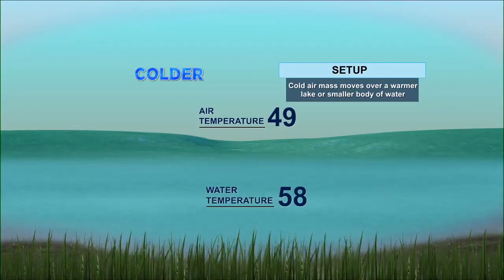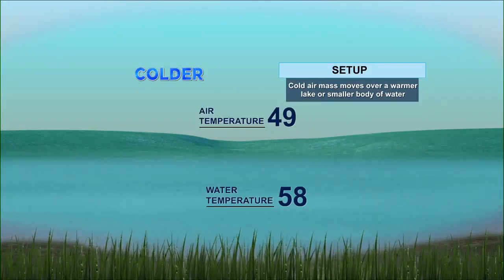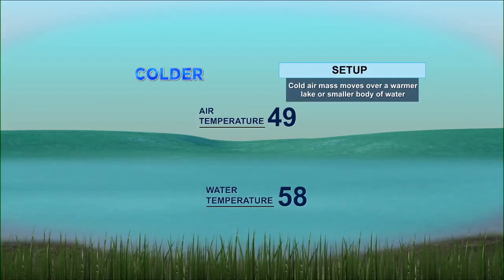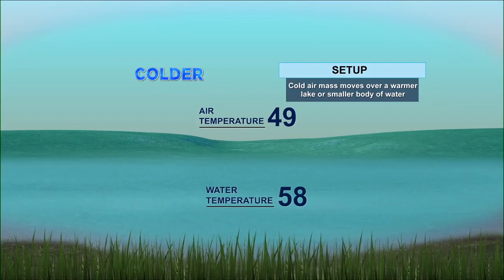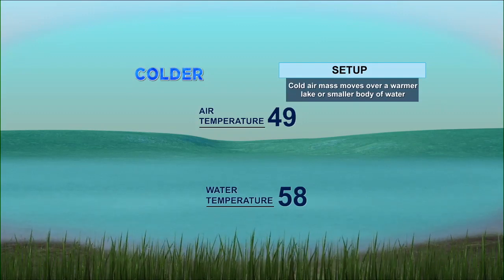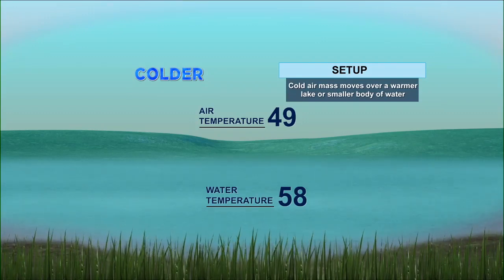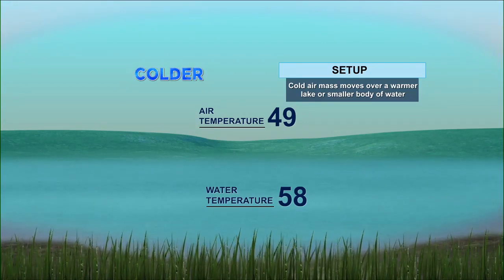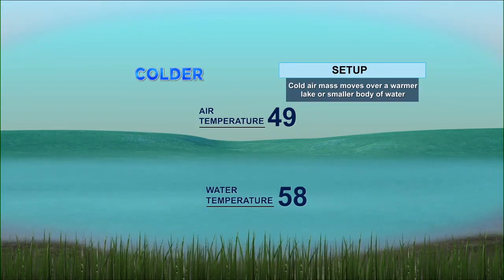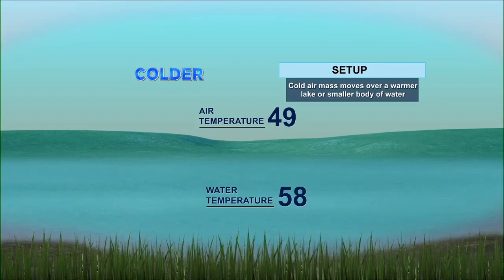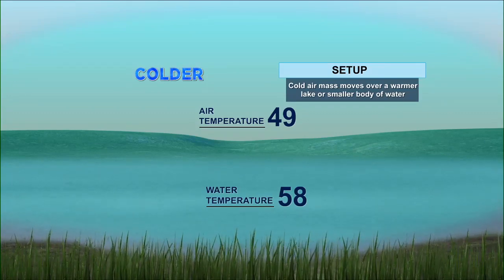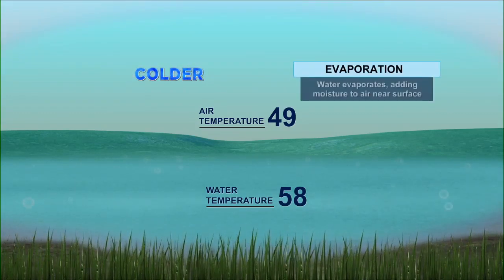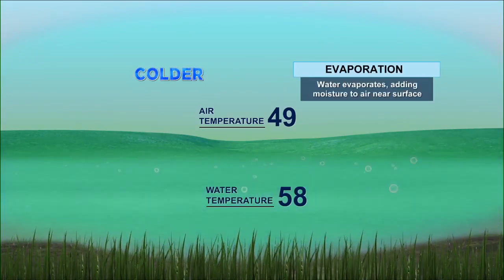We'll start with steam fog. The setup is a cold air mass moving over a warmer lake or a smaller body of water. You can see the warmer temperature at 58 and the air temperature at 49 — it is colder. So that's one of the ingredients you need for steam fog to develop.